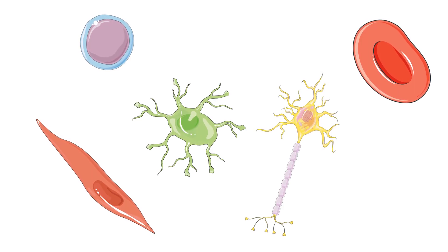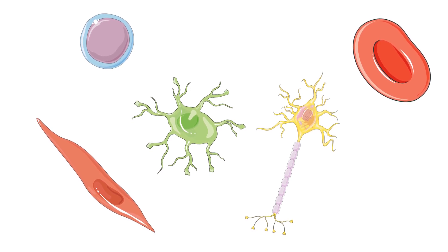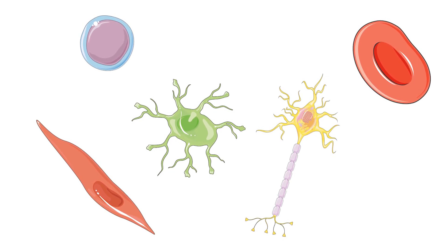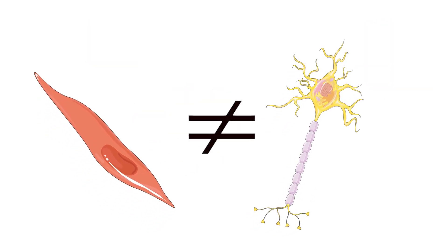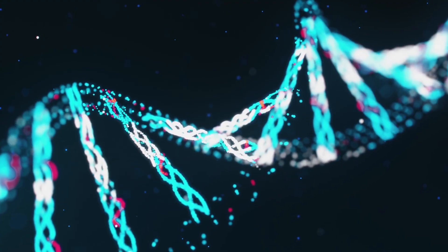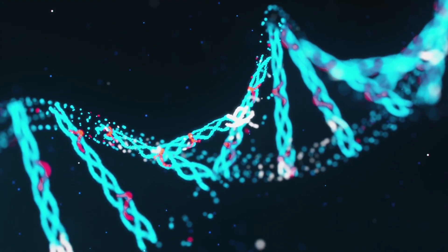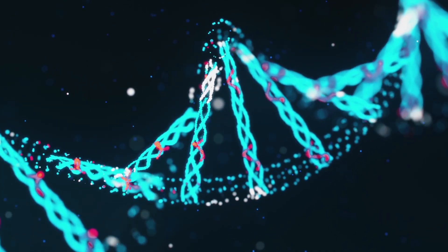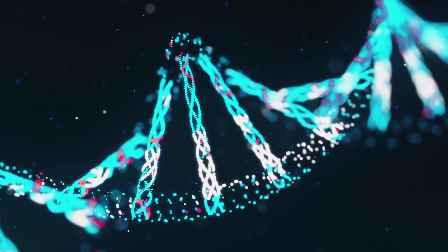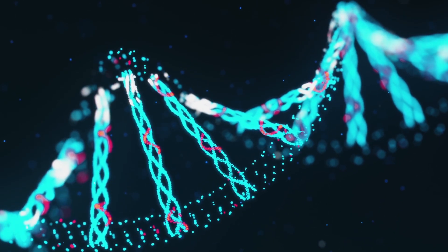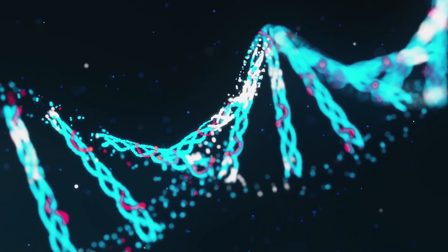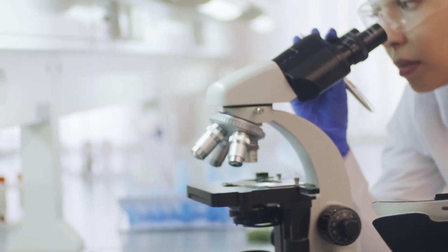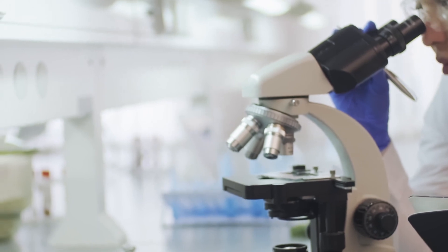Think of it this way: in the human body we find billions of cells which contain the same DNA. However, these cells can be very different from each other — a neuron does not look or behave like a muscle cell. The reason why cells with the same DNA can be so diverse is that the DNA can be regulated in a variety of different ways. Neurons and muscle cells have the same DNA but different sets of active or inactive genes, and we are just starting to understand how these networks work.